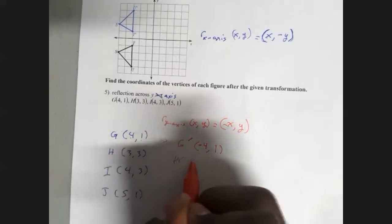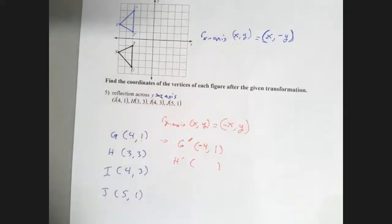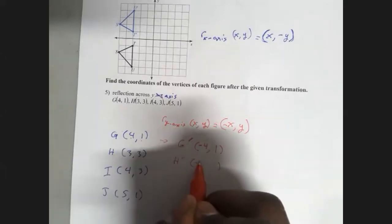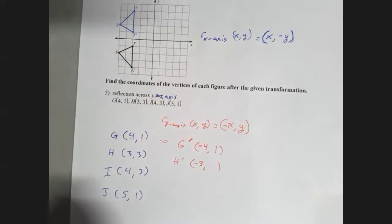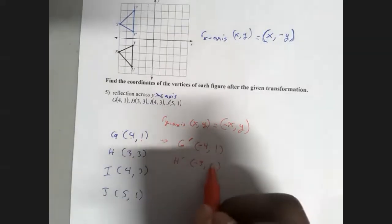H prime. This one should be pretty straightforward and easy. It's (3,3), so my x becomes the opposite, so negative 3. My y stays the same, positive 3.